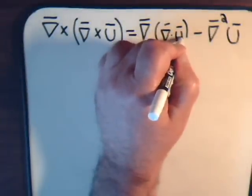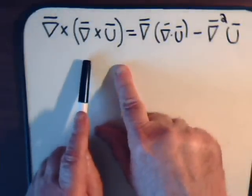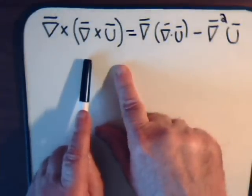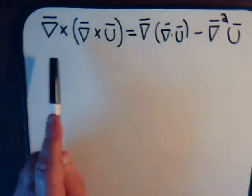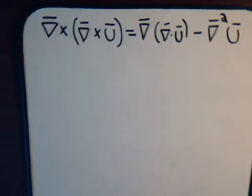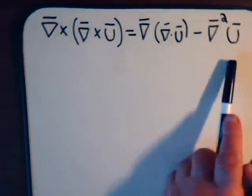Let's take a look at this vector identity. Here we have the curl of u, then we're taking the cross product of that with the del operator. So this would be the curl of the curl of u, and we're supposed to prove that it equals this.